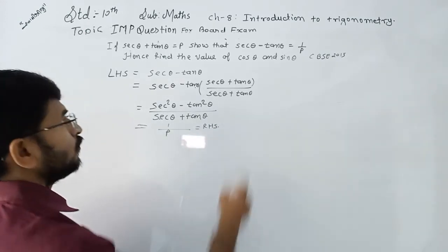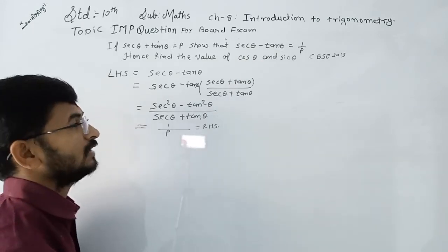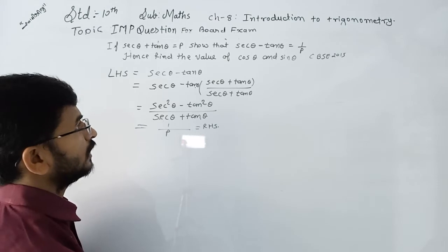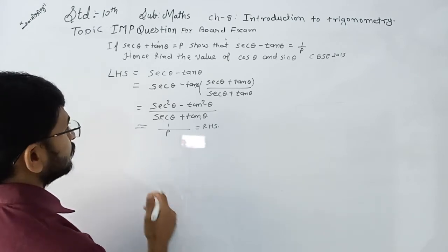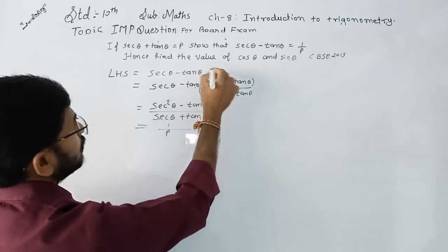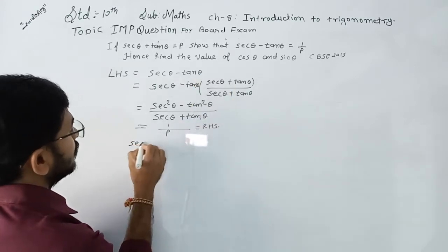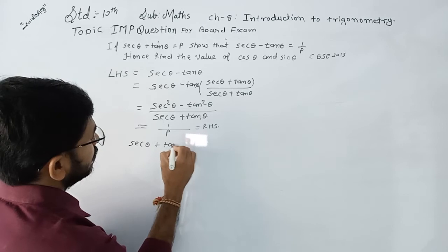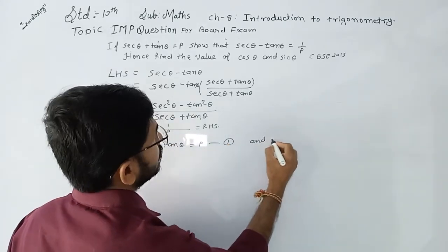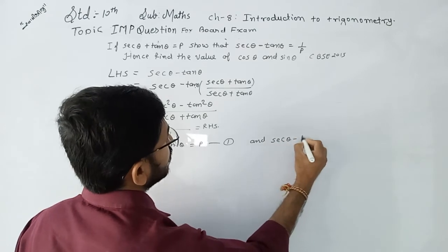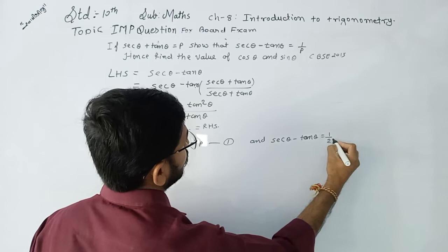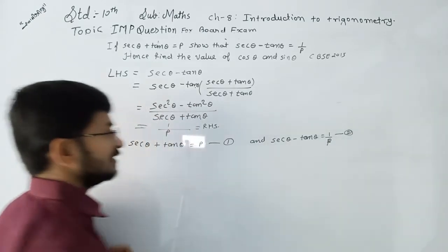Now we want to find the value of cos θ and sin θ. So first of all, given that sec θ + tan θ = p as equation 1, and sec θ - tan θ = 1 upon p as equation 2.